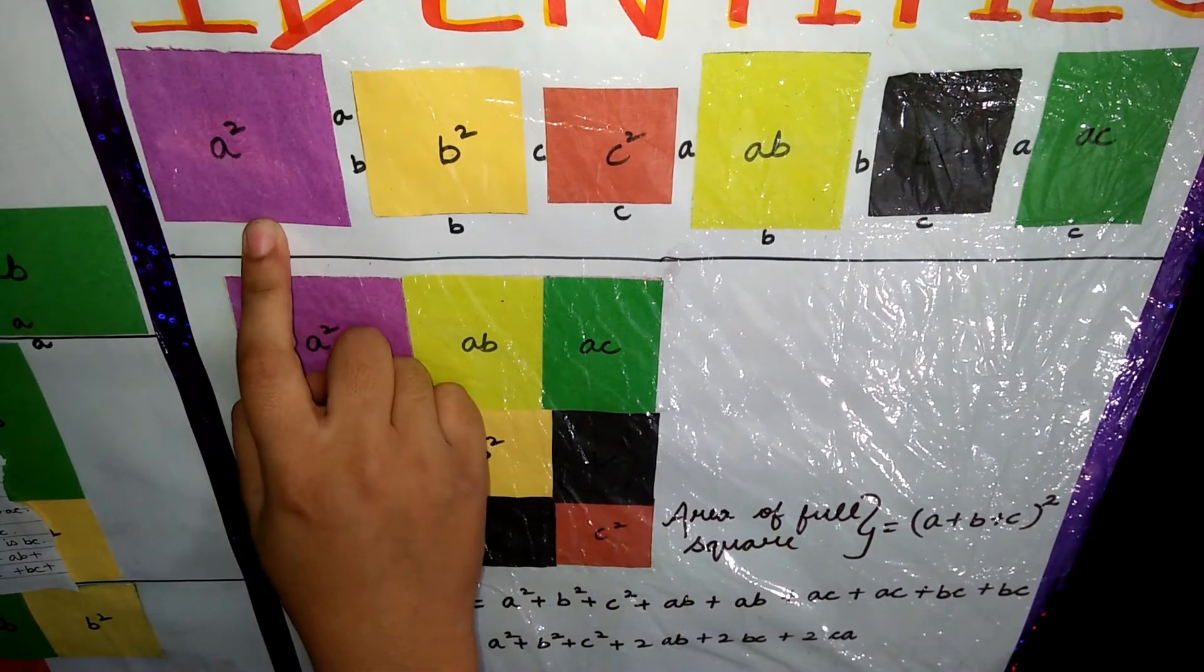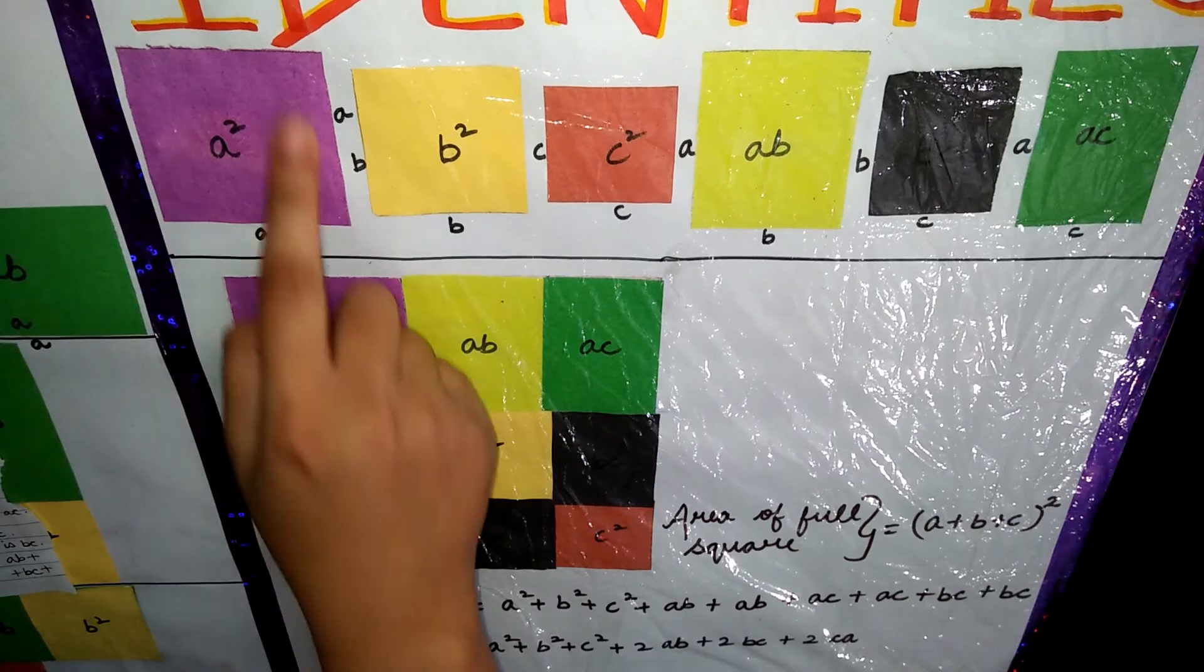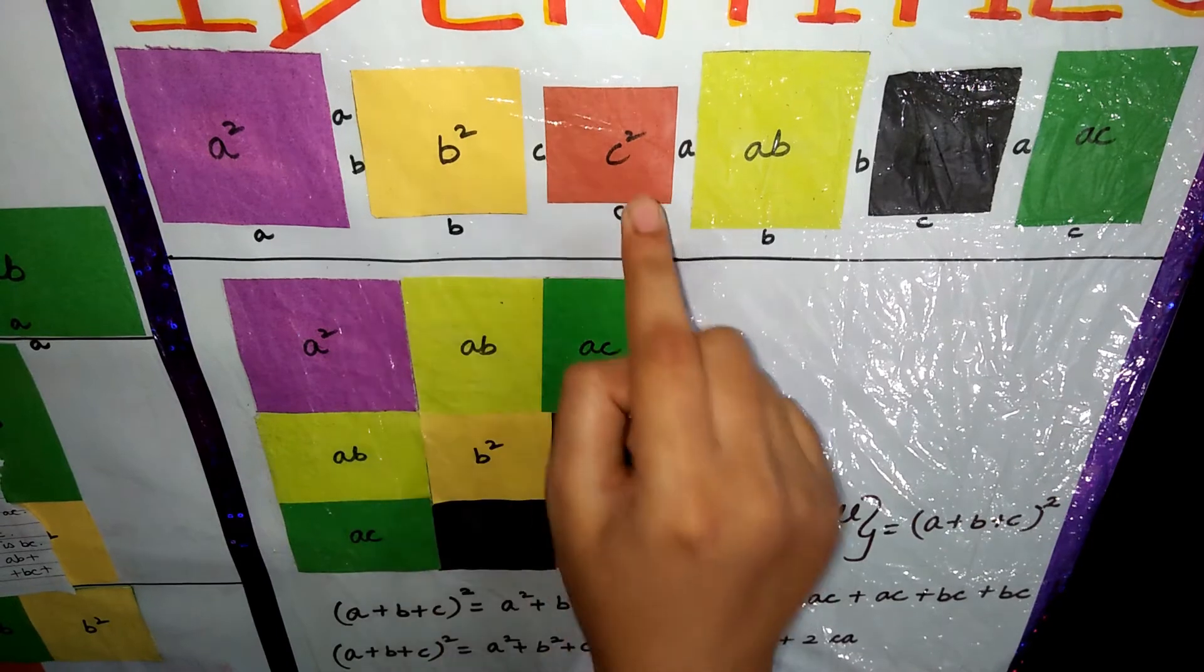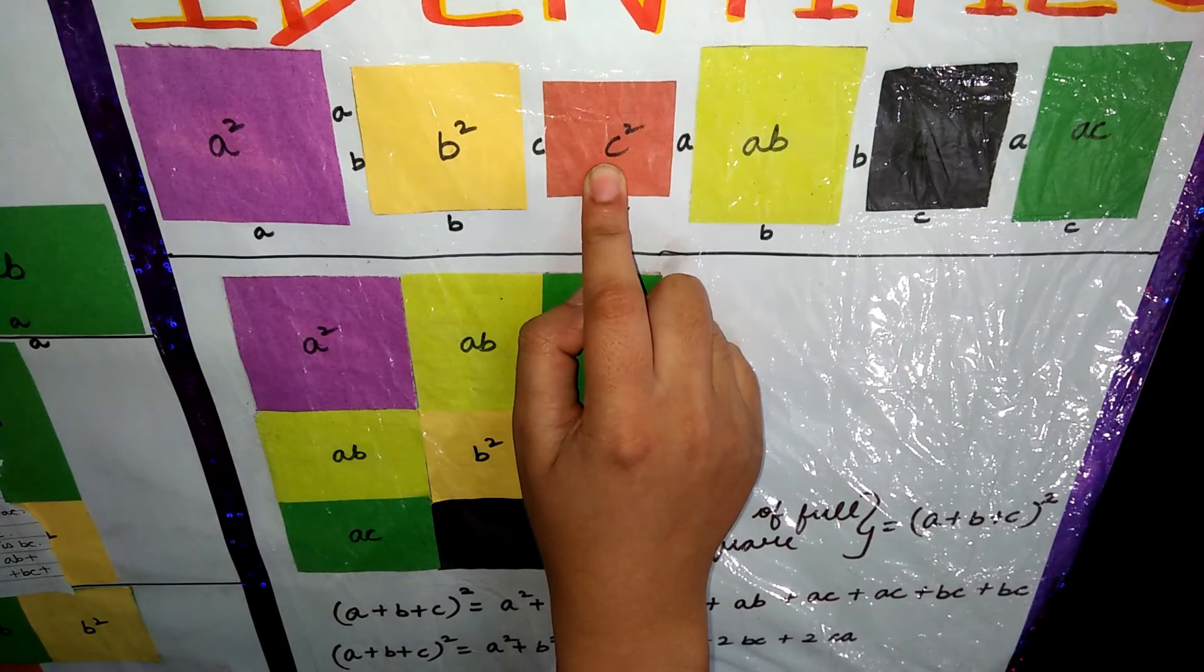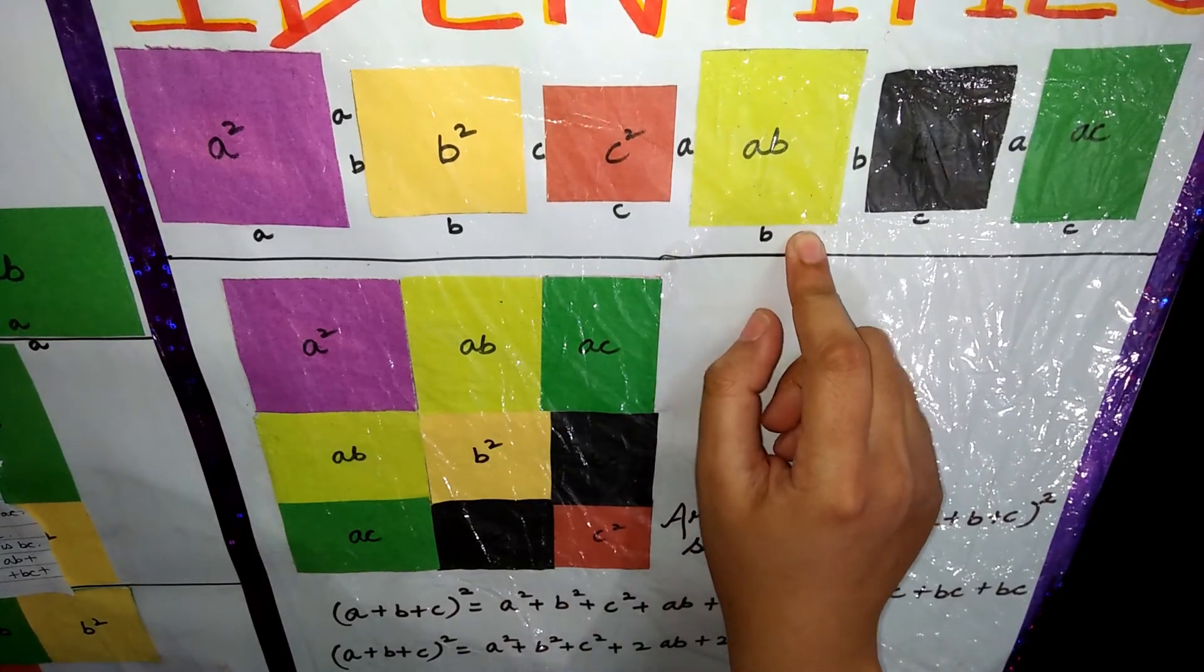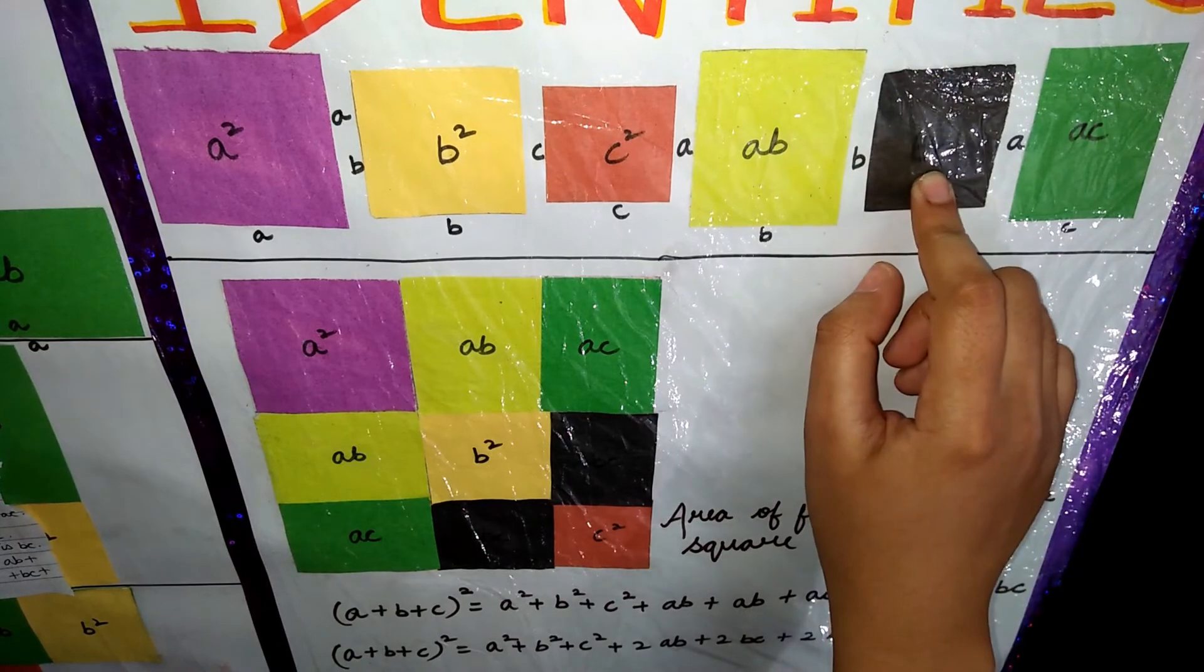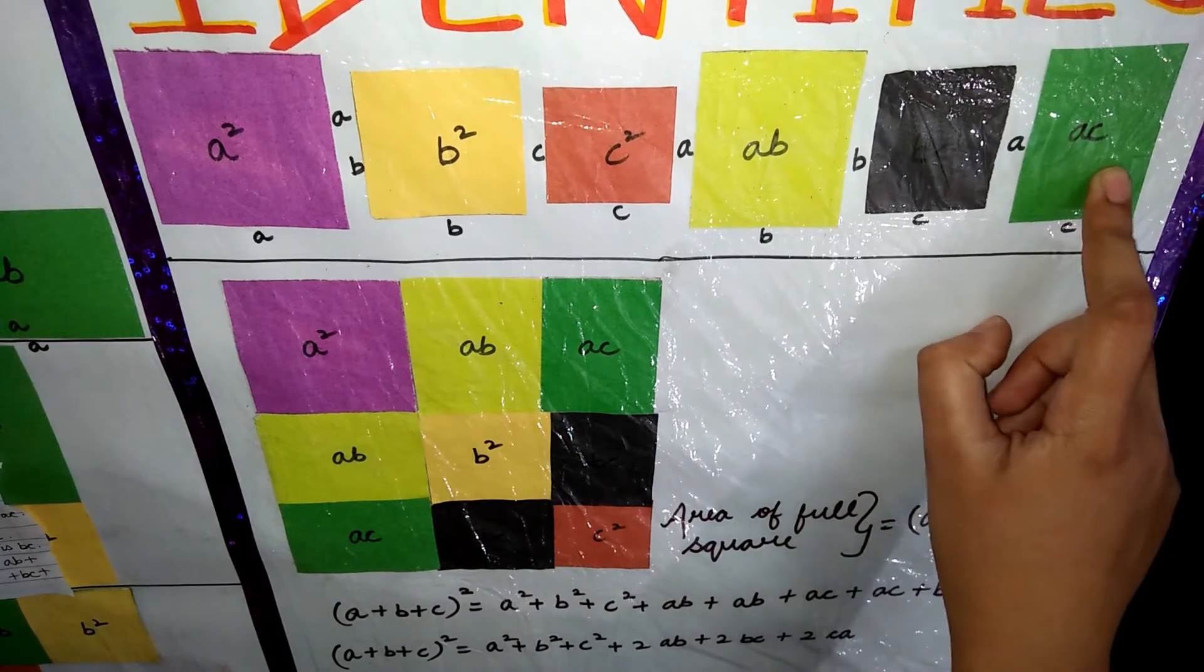Now take bigger square which is a, sides are a, a and a. So the area of the square is a square. The medium size square whose sides are all b, so area of the square is b square. Now take a smaller square whose all sides are c, so the area of the square will be c square. Now take a rectangle of bigger size whose one side is a and one side is b, so area of this is ab. Then another rectangle of smaller size whose one side is b and one side is c, so the area of this rectangle is bc. Then the area of this rectangle is ac.